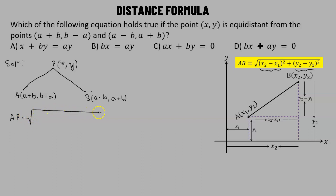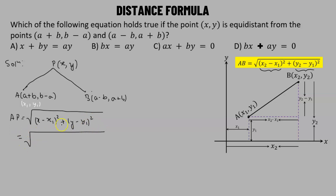Applying the distance formula to find AP: let A plus B correspond to x1 and B minus A correspond to y1. So AP equals the square root of x minus A minus B whole squared plus y minus B plus A whole squared.